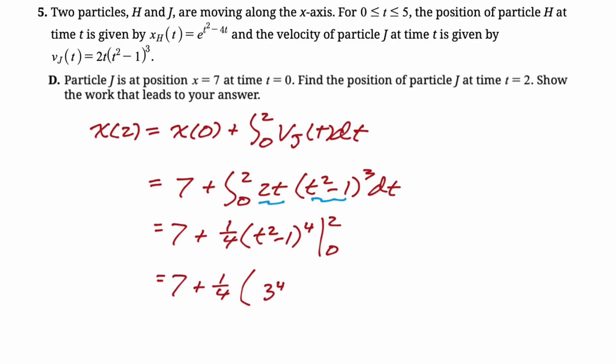Don't forget, when you plug in 0, you don't always get 0. Sometimes you get other values. So it's minus. When we plug in 0, we get 0-1=-1. So (-1)⁴. We should stop here and just leave our answer. I'm not going to, but we definitely should. We're actually getting 7 plus 1/4 of 81-1. So 1/4 of 80. 1/4 of 80 is 20, so we get 27.